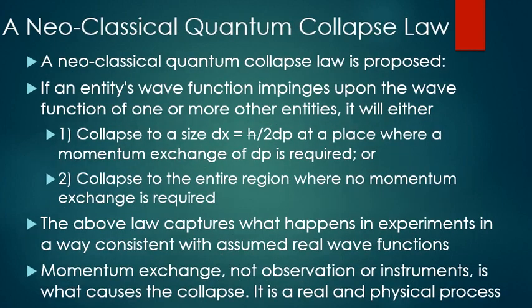We can also go on to define a neoclassical quantum collapse law. If an entity's wave function impinges upon the wave function of one or more other entities, it will do one of two things: it will either collapse to a size equal to delta x equals h-bar over 2 delta p at a place where a momentum exchange of delta p is required, or it will collapse to the entire region where no momentum exchange is required. The above law captures what happens in experiments in a way consistent with a real assumed wave function. Momentum exchange, not observation or instruments, is what causes the collapse. It is a real and physical process.